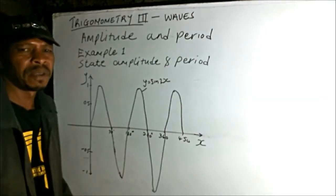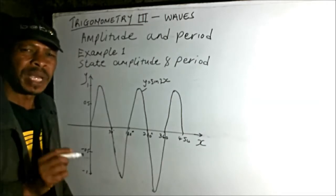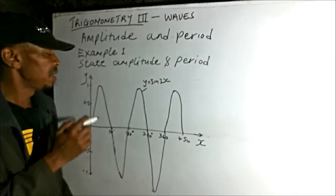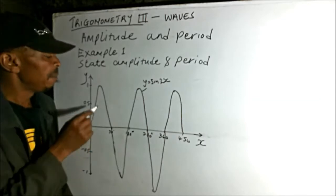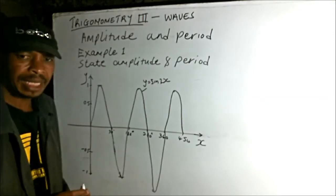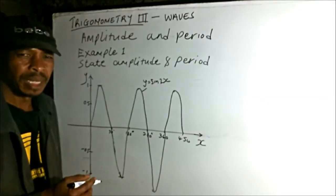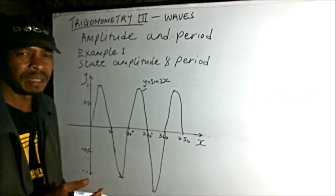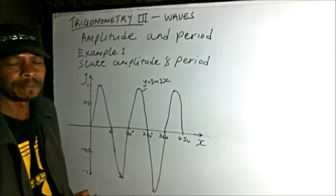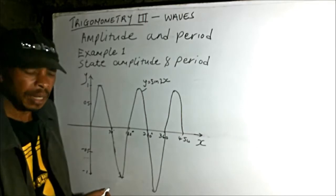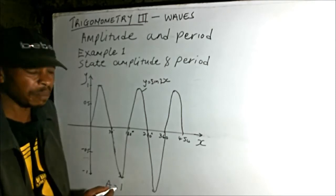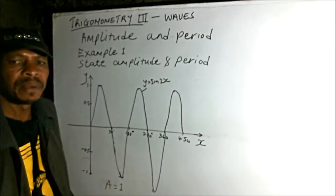We start with amplitude. We have said that amplitude is the maximum displacement. If you check on what I have on the board, the maximum displacement is 1. The negative side is negative 1, but we are talking of displacement, which is a vector, so it will take the positive value. The magnitude of negative 1 is 1. So amplitude, which we can use A to represent, equals 1. That is the maximum displacement.